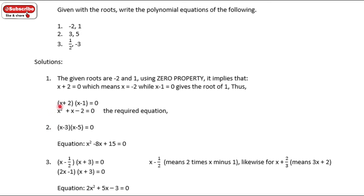For number 2, the given roots are positive 3 and positive 5, so the factors are x minus 3 and x minus 5, giving the equation x squared minus 8x plus 15. For the next example with roots negative 1 half and negative 3, multiply through to clear the fraction: 2 times x gives 2x, then bring over the constant to get 2x plus 1, and similarly 3 times x gives 3x plus 2. So the equation is 2x squared plus 5x minus 3.